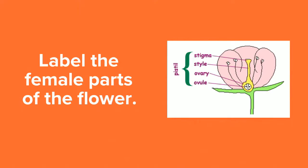The female part of the flower is called the pistil and it's made up of four parts. It's got the stigma at the top, the style in the middle, and the ovary on the bottom, which holds the ovules.